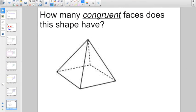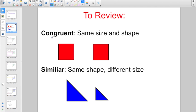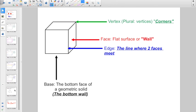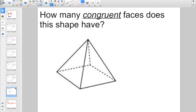How many congruent faces does this shape have? If you remember, congruent means the exact same size and shape. And, faces means the wall. Congruent faces looks to me like this bottom face or bottom wall would be a square. But, every other wall on this pyramid would appear to be congruent, because that base is a square.